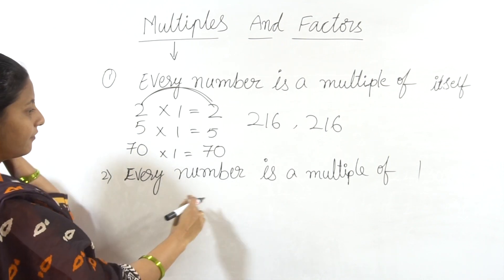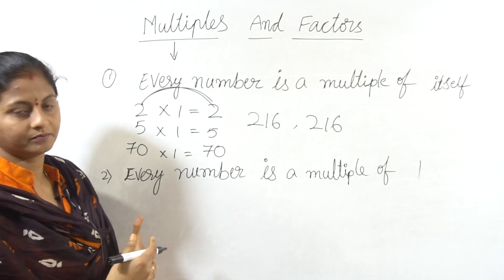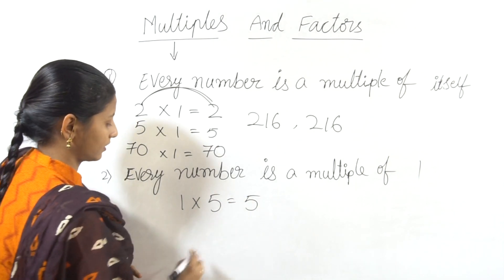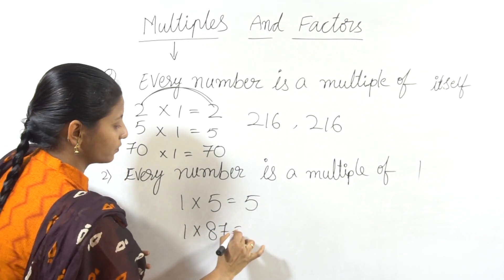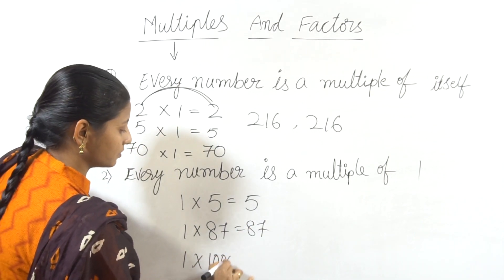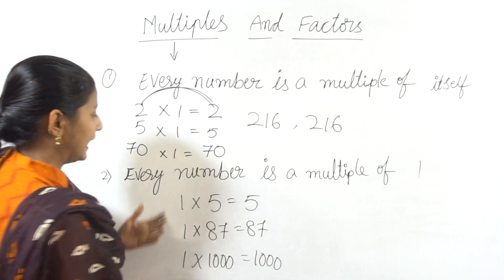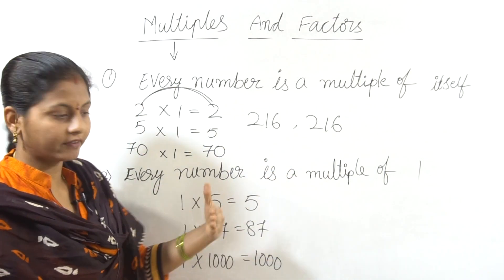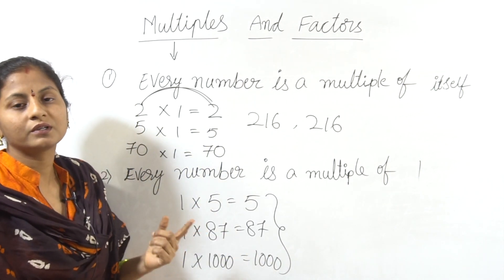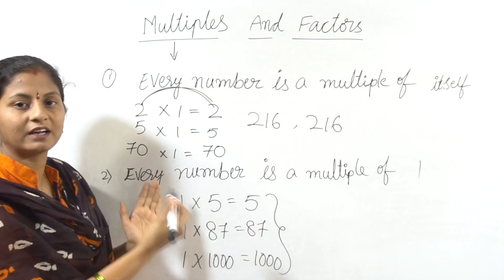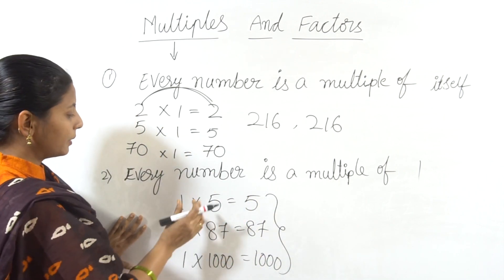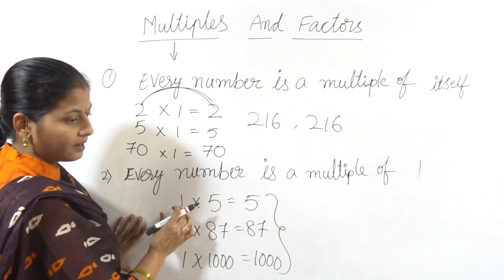Next fact: every number is a multiple of 1. In the 1 table: 1 times 5 is 5, 1 times 87 is 87, 1 into 1000 is 1000. Every number is a multiple of 1.